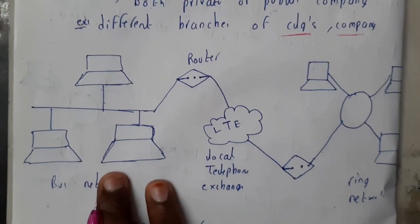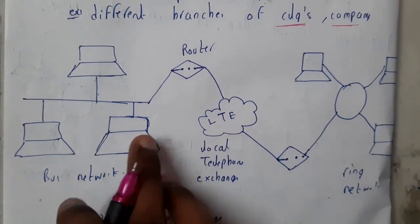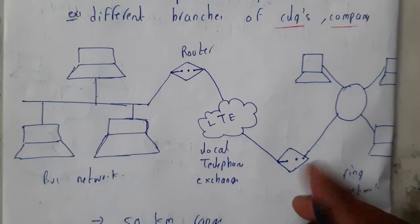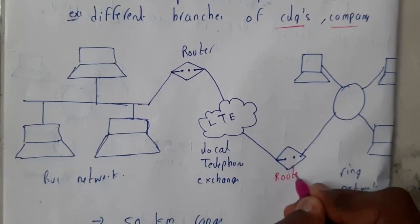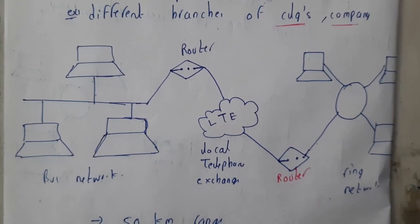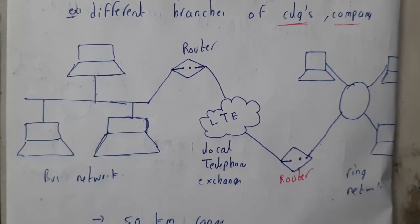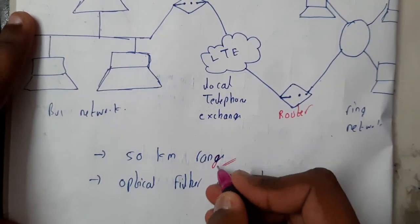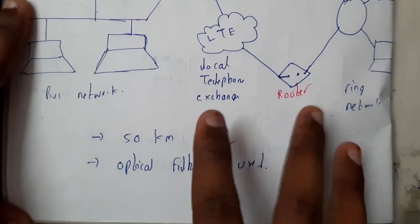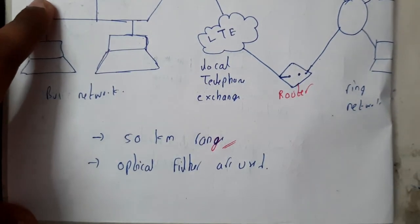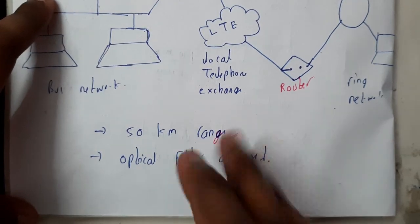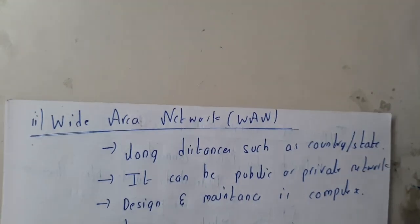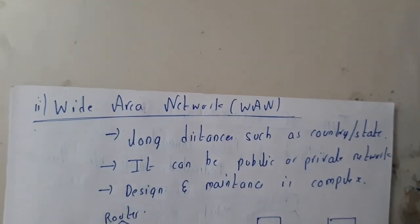The best examples of MAN are different branches of colleges or companies. If we draw a diagram, one local area network and another local area network are connected with the help of routers — we will go through routers in future lectures. The range of MAN is 50 kilometers, so the two colleges or companies should be within around 50 kilometers. Data transfer in MAN uses optical fiber.